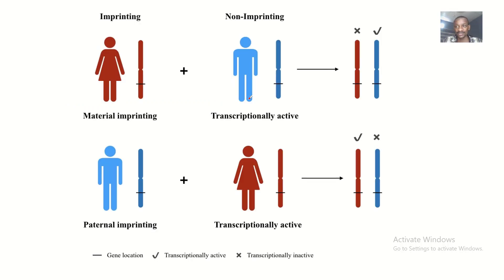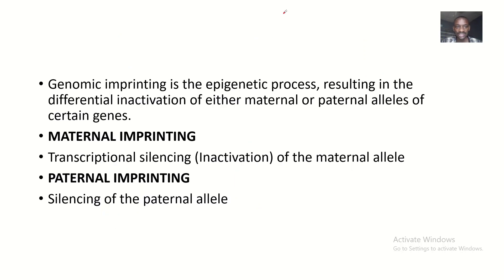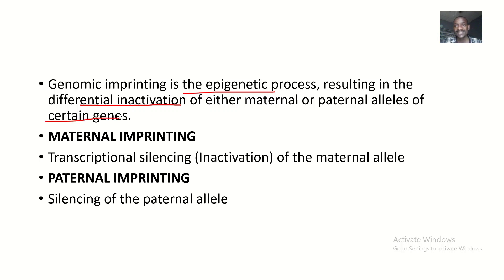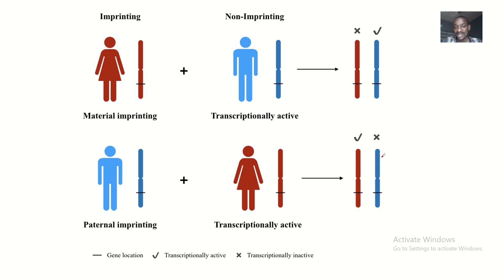So, genomic imprinting. Genomic imprinting is basically the deactivation of one or more chromosomes — it could be from the paternal side or from the maternal side. More precisely, genomic imprinting is the epigenetic process resulting in the differential inactivation of either the maternal or paternal alleles of certain genes.